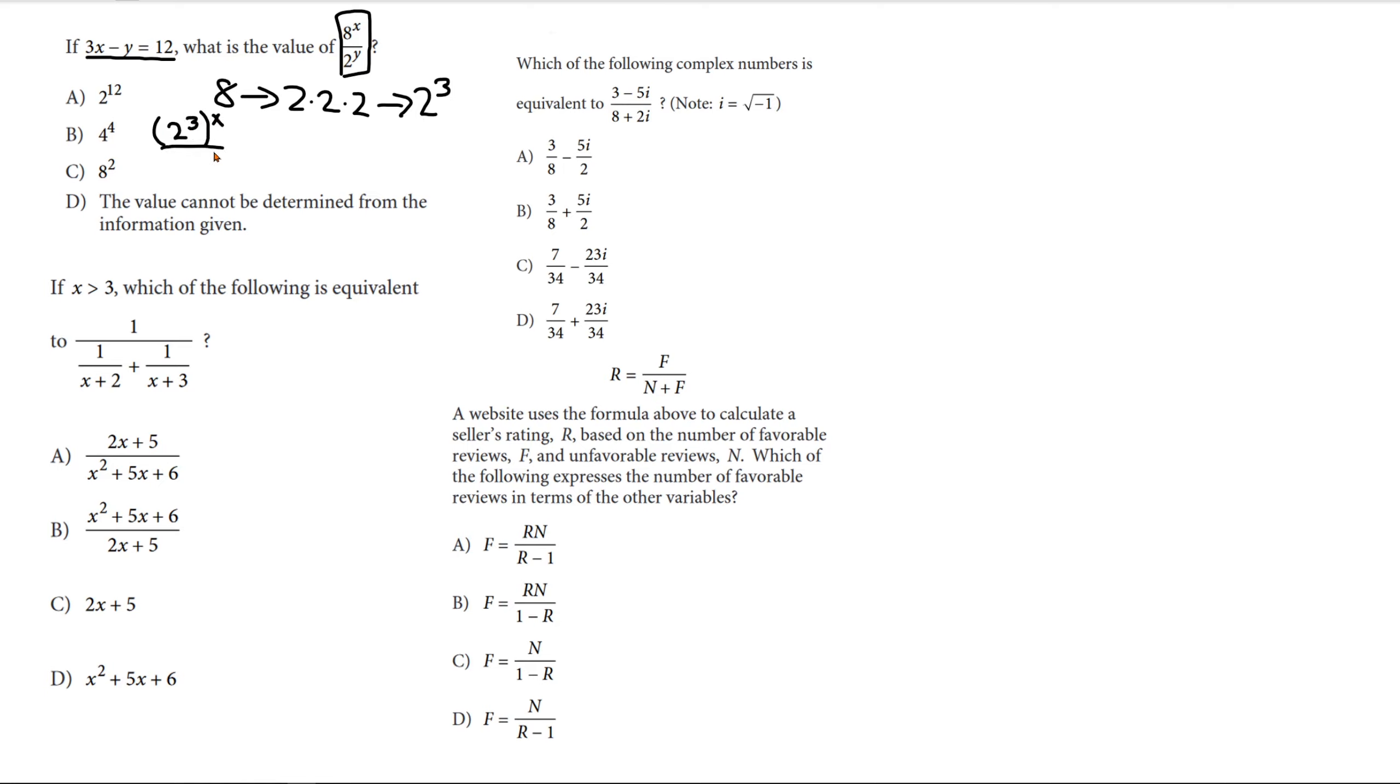So, 2 to the third to the power of x over 2 to the power of y. And what we can do with these exponents is just multiply them. Since the exponent to exponent, you can just multiply them. So, 2, 3x over 2y.